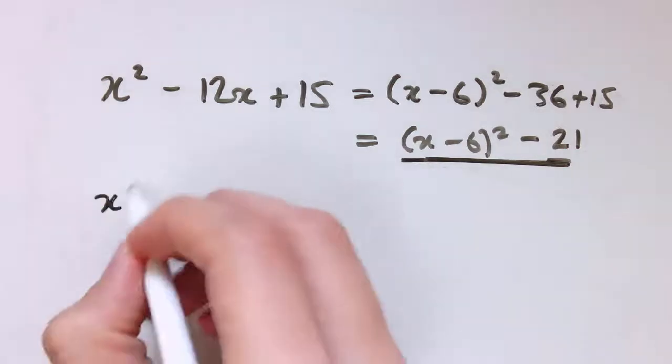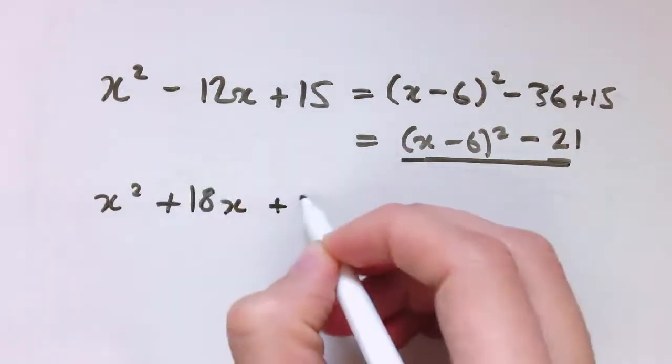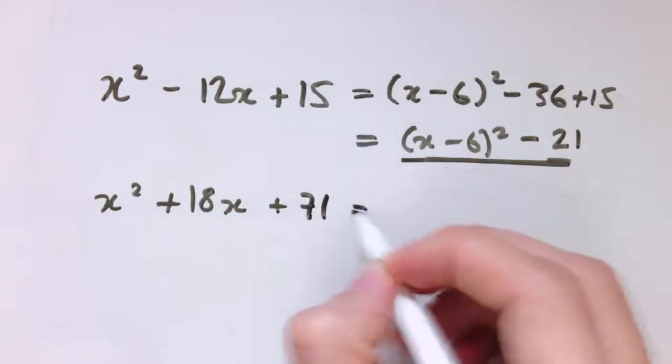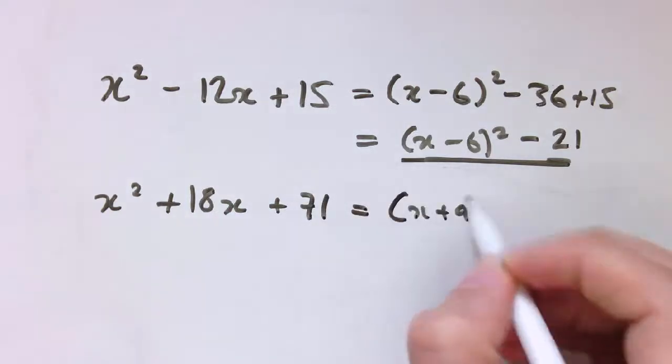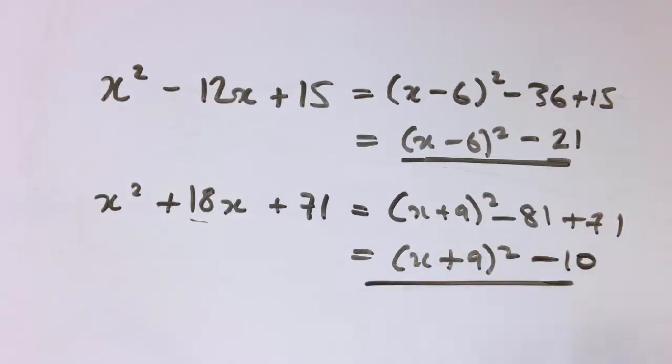And eventually, we don't think about these too much as we're doing them. Let's say I've got x² + 18x + 71. That would be x + 9 squared, because of half of 18. 9 squared is 81, so I take that off, and I've still got my 71. So I get x + 9 squared minus 10.